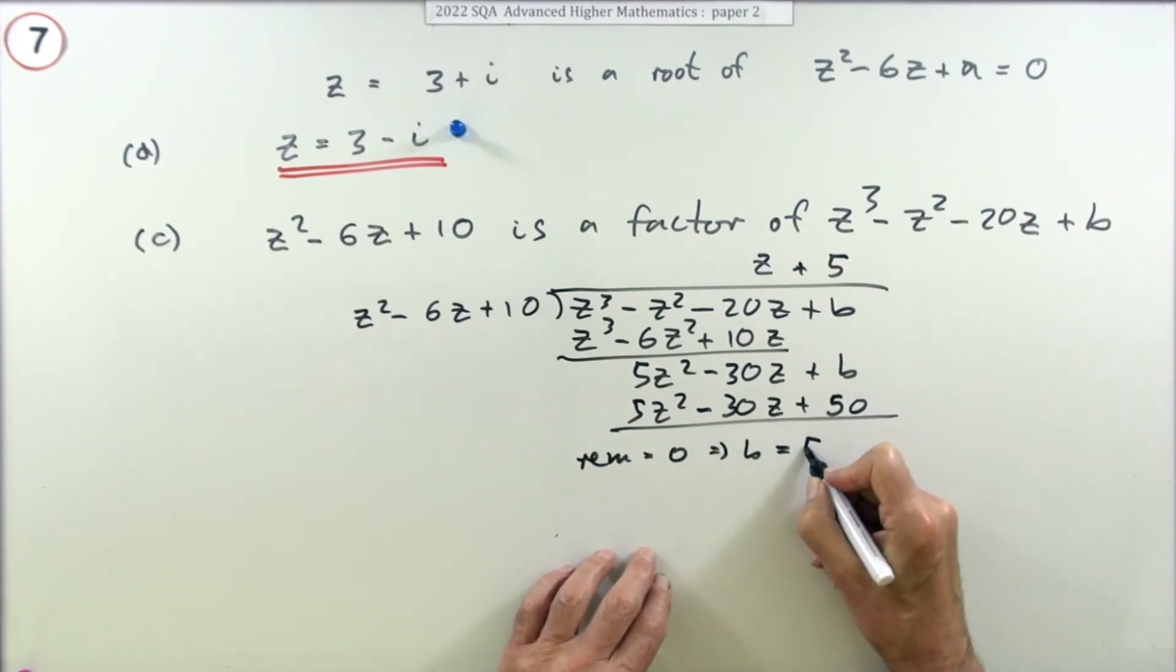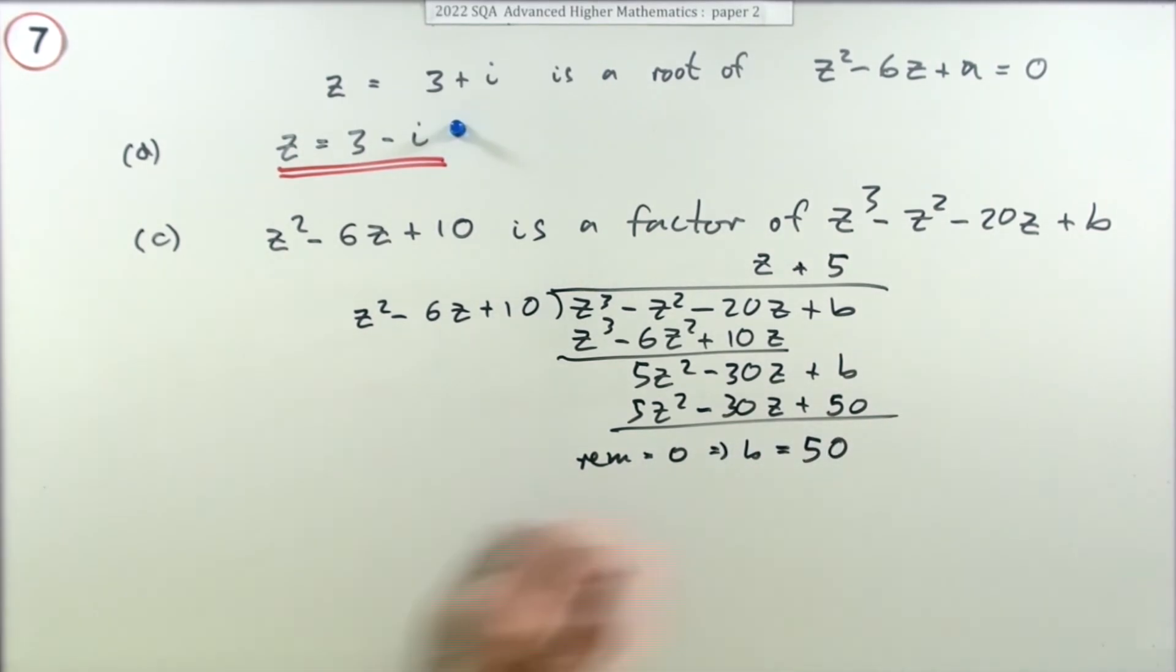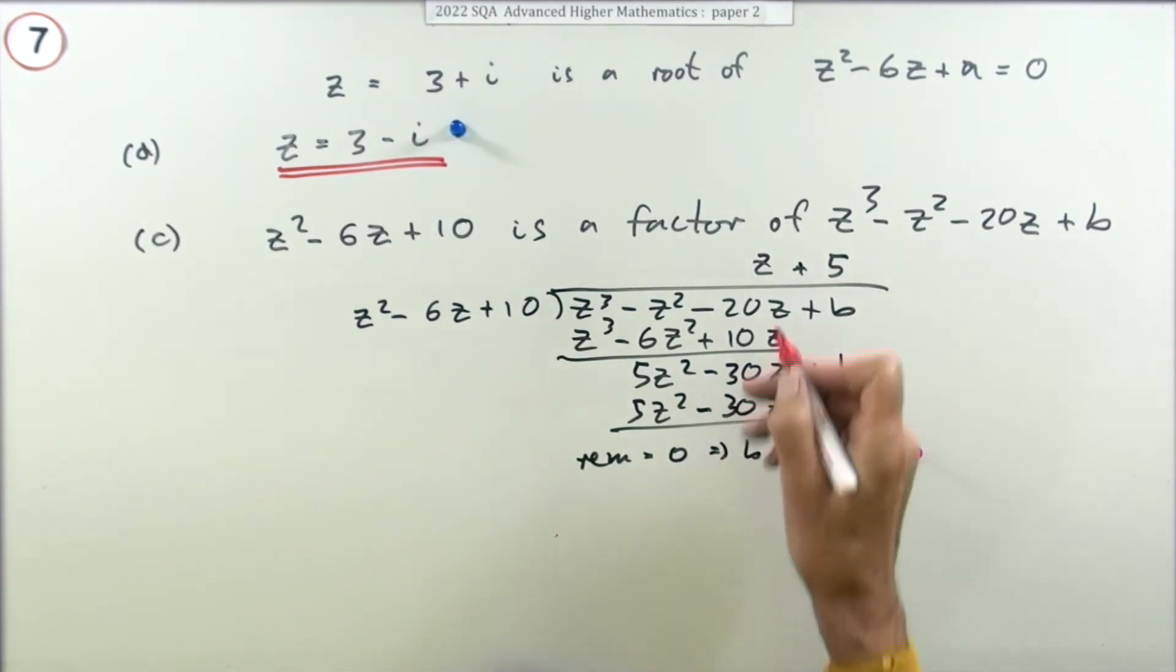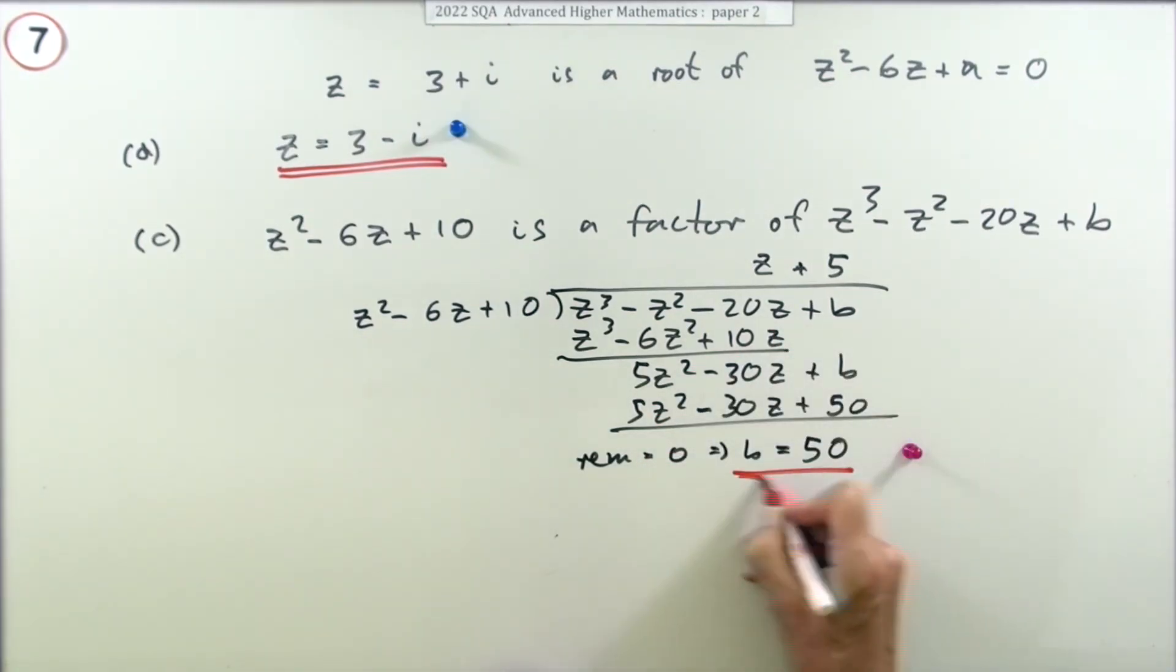Now if the remainder has to be zero, that means that b has to be 50. There's the mark. I think if you just thought watch out, you'd probably find that this was quicker. You'd probably find that this was quicker.